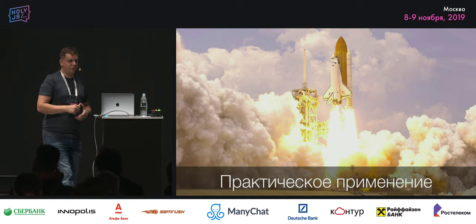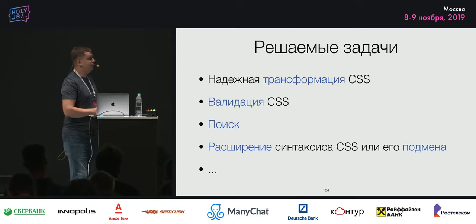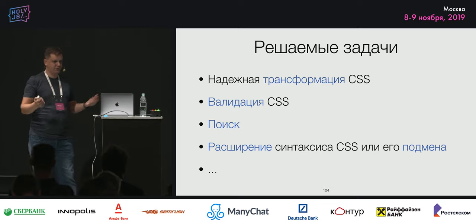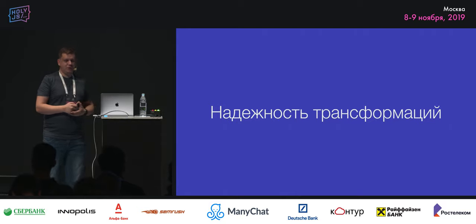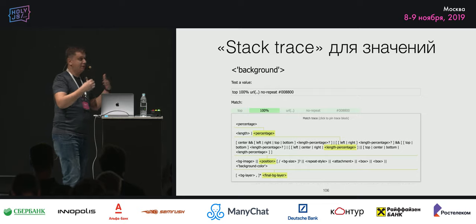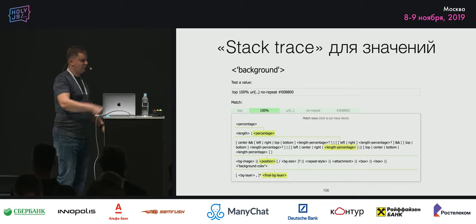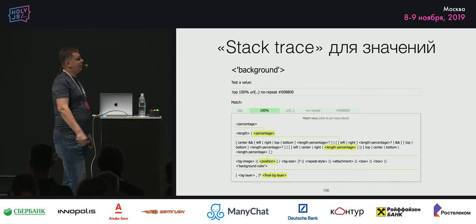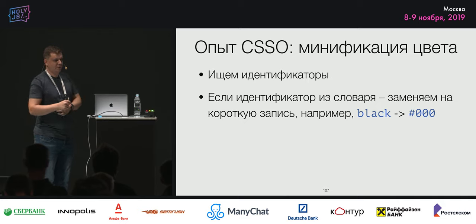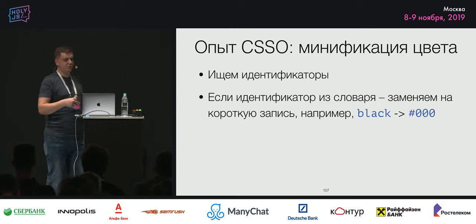Самая теоретическая часть закончилась, теперь немножко практики. Для чего это можно использовать уже сегодня? Во-первых, делать более надёжную трансформацию CSS, делать валидацию CSS, поиск и расширять синдексы CSS, когда вы пишете что-то нестандартное. Про трансформации: когда мы делаем матчинг, устанавливаем путь, что на что замачивалось. Даже зайти в reference CSS3, там можно для каждого свойства описать некоторые значения, показывается, как эти значения разбиваются по различным частям. Можно увидеть так называемый stack trace для значений — что на что замачивалось. Это нужно для того, чтобы, когда мы выбираем определённую часть, мы видели, что это и процент, и position, и что оно вообще находится в background.